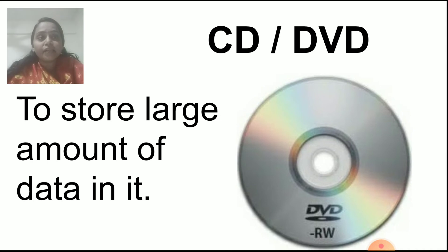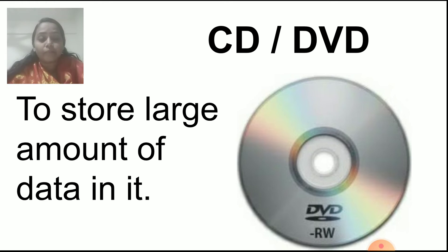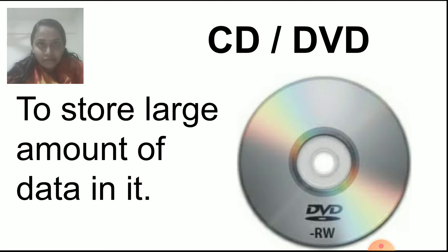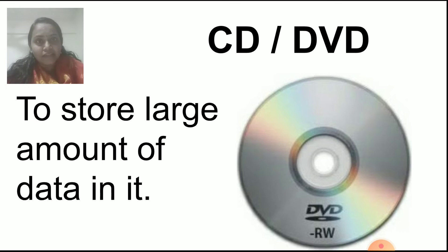Now next part is CD or DVD. This is a round shape — you have seen this at home. CD is round in shape. You can store a large amount of data in it: whatever movie you want to save, or music you want to store, you can store it in the CD. It is also used for listening to music and watching movies. If a movie is stored in the CD, you can watch it on the monitor.